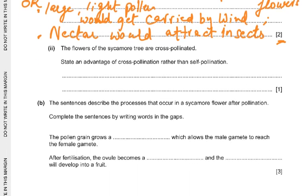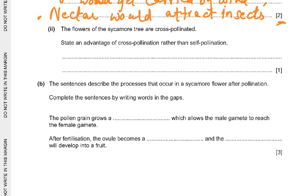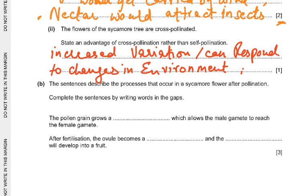The flowers of the sycamore tree are cross-pollinated. State an advantage of cross pollination rather than self pollination. It's going to result in more variation, and if there's variation then there is the capacity to respond to changes in the environment. For example, if there is variation in root length — short, medium, and long roots — then during drought the short roots will probably die but the long roots will survive. If it's self pollination, it will be genetically the same.